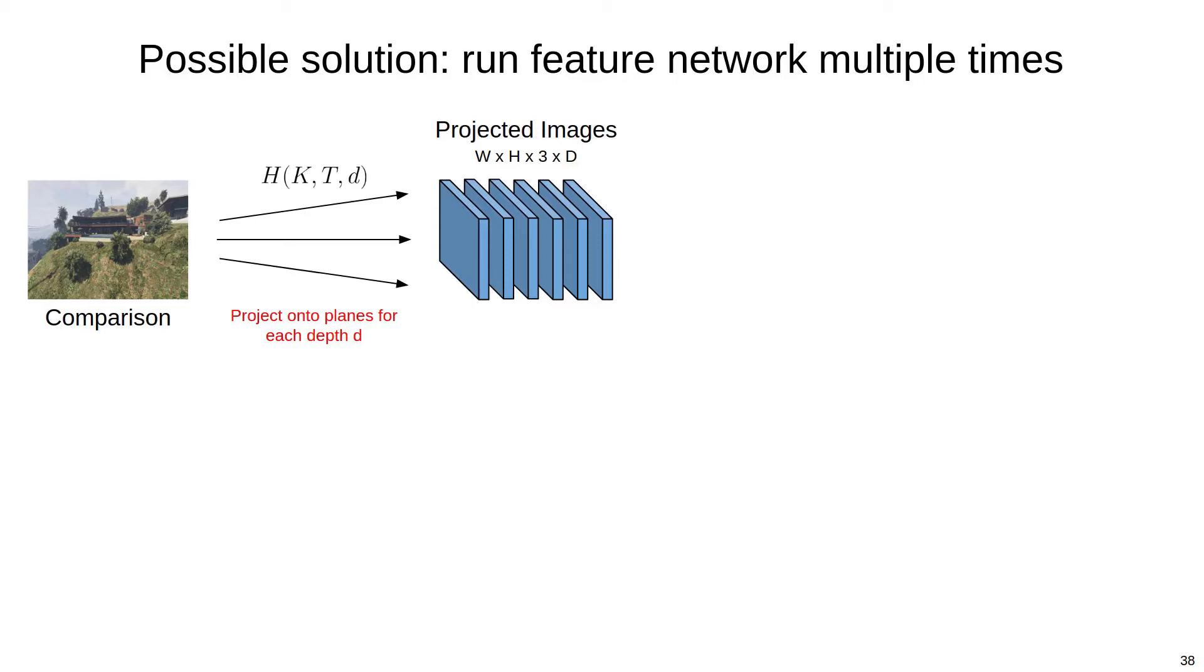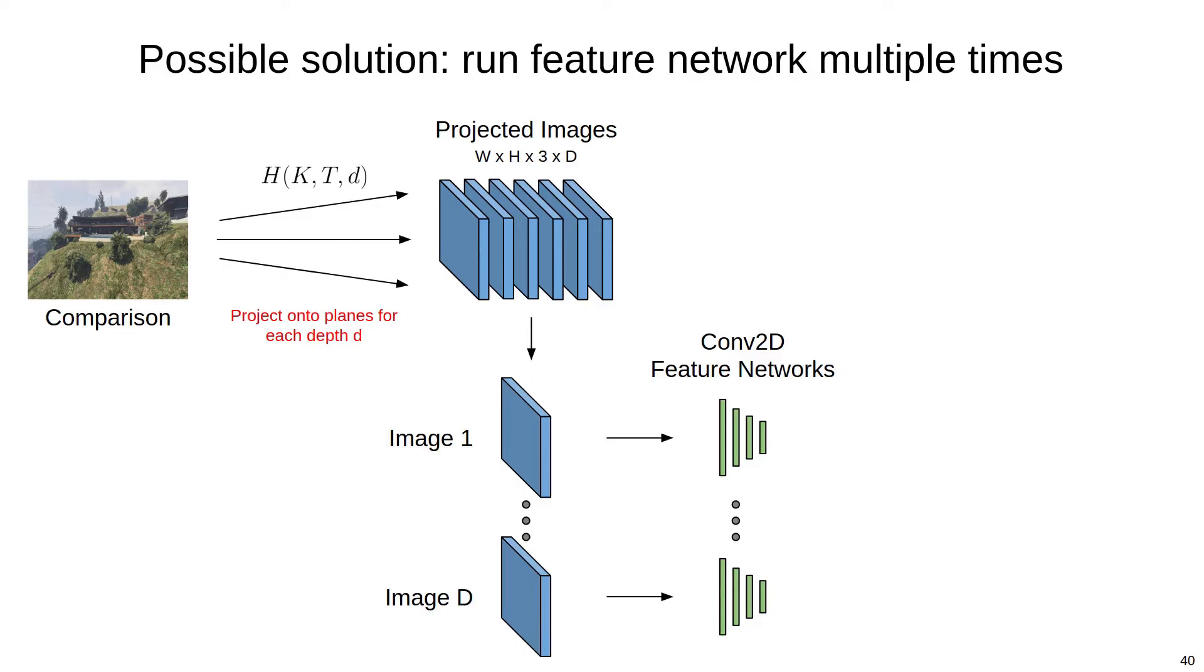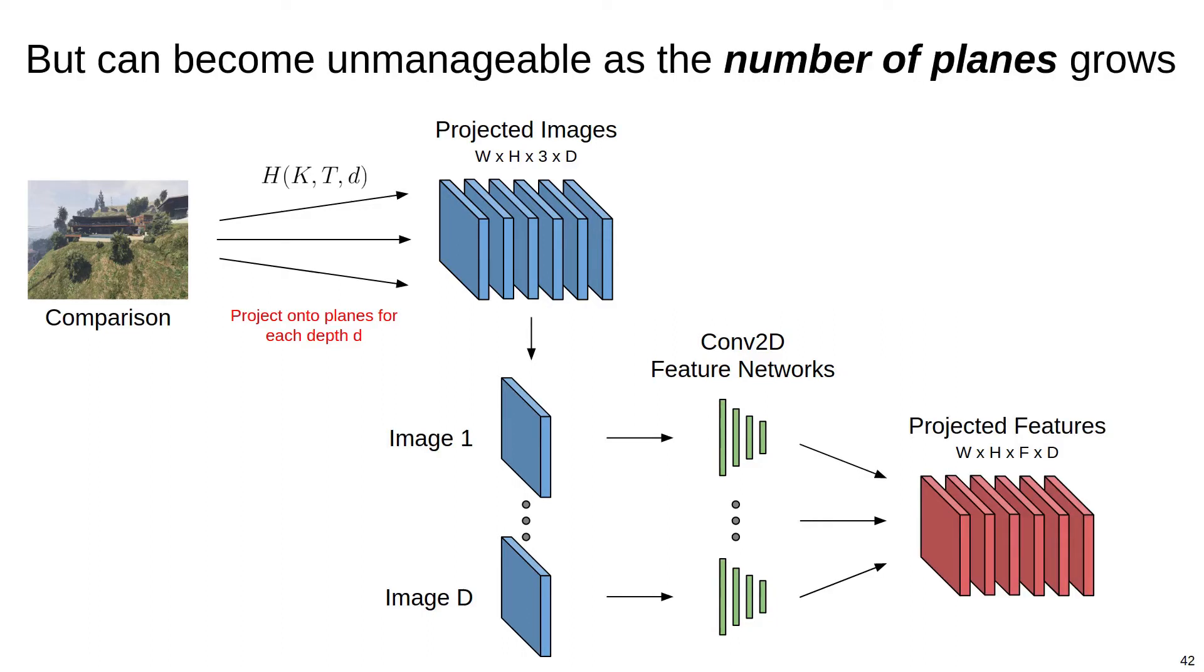One option is to first project the comparison image onto the planes and then extract features from each projected image using conventional 2D convolutions. So we take the comparison image, apply the set of homographies that project the image onto the plane set, then take each image and pass it through a conventional feature network and then aggregate all the resulting features. While straightforward, this approach requires executing the feature network multiple times, which can become unmanageable as the number of planes grows.